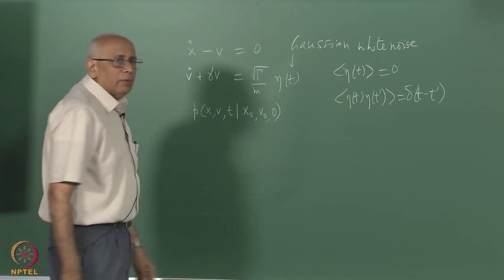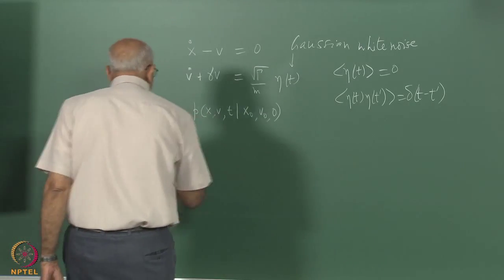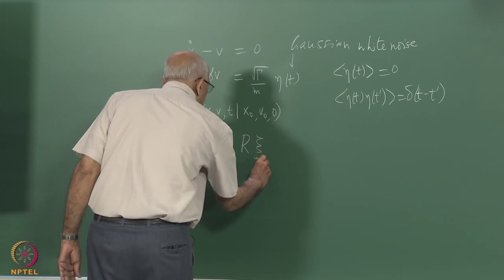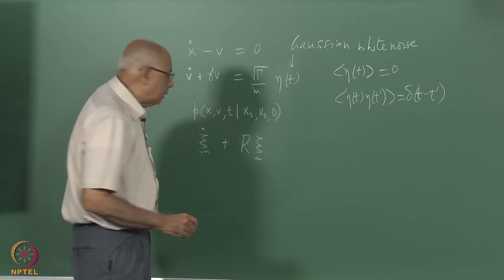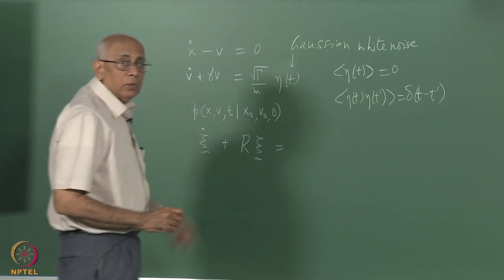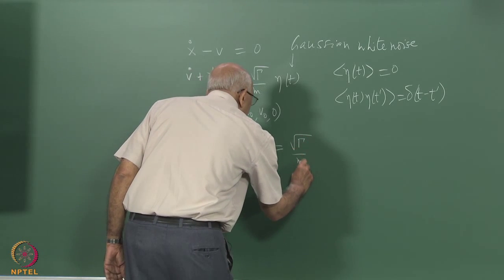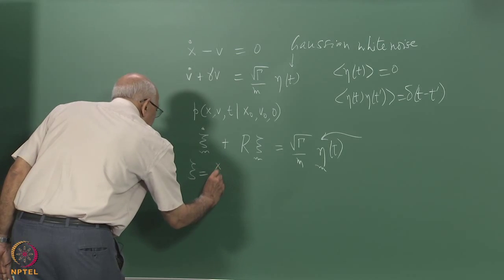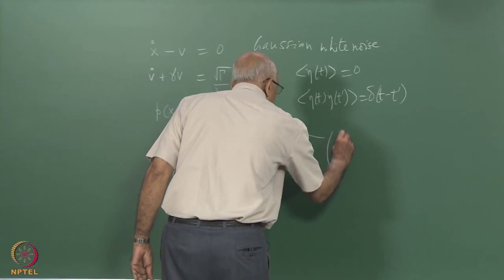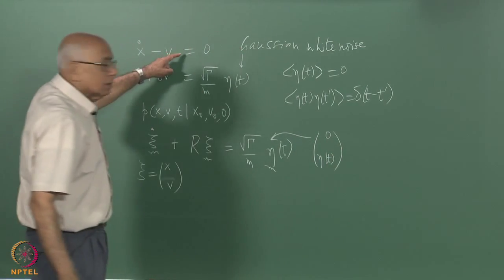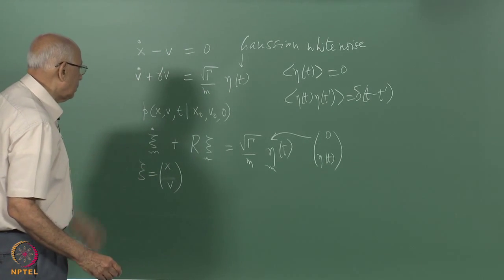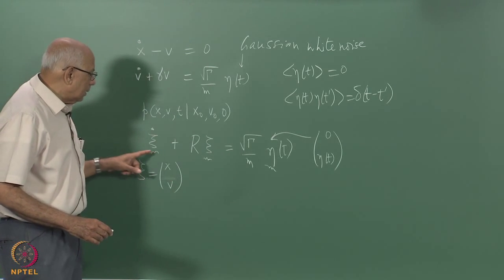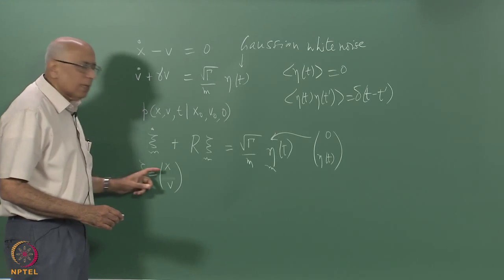It turns out that if you have a general multi-dimensional process and put them together in vector form — calling that vector xi — then xi-dot plus a linear drift R xi, where R is some constant matrix acting on the column vector, equals on the right-hand side the usual noise. Here xi stands for (x, v) and eta(t) stands for (0, eta(t)). There is no noise in the x equation, but there is a driving noise in the v equation due to collisions with other particles in the fluid.